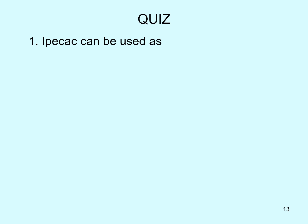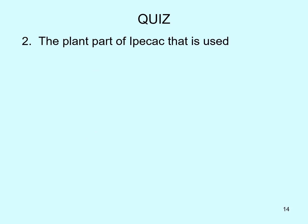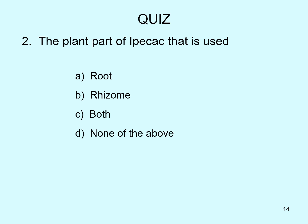Under the quiz questions: the first question asks what Ipecac can be used as — expectorant, emetic, anti-amoebic, or all of the above. The correct answer is all of the above. The second quiz question asks which plant part of Ipecac is used — root, rhizome, both, or none of the above. The correct answer is both.